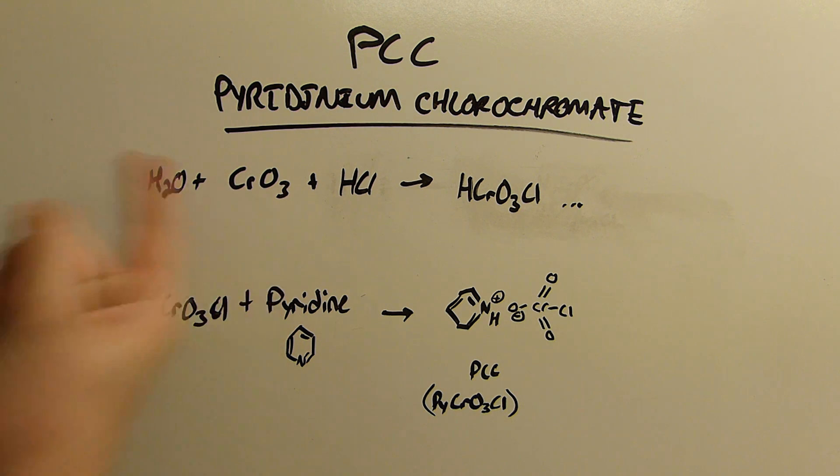We'll just dissolve some chromium trioxide in water to form chromic acid, add hydrochloric acid to it which will form chlorochromic acid in equilibrium with a bunch of other things. This is a very simplified diagram here.